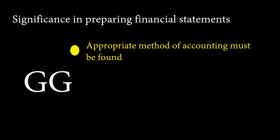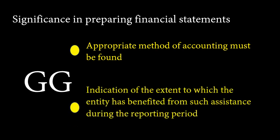The receipt of government assistance by an entity may be significant for the preparation of the financial statements for two reasons. Firstly, if resources have been transferred, an appropriate method of accounting for the transfer must be found. Secondly, it is desirable to give an indication of the extent to which the entity has benefited from such assistance during the reporting period. This facilitates comparison of an entity's financial statements with those of prior periods and with those of other entities.